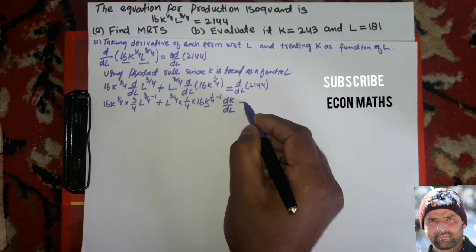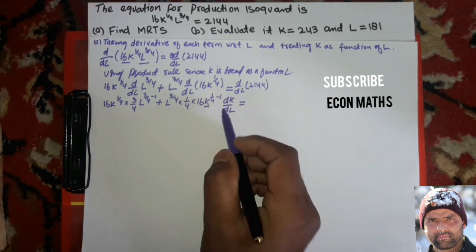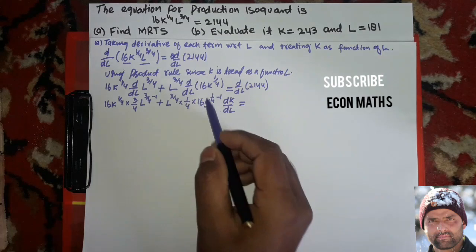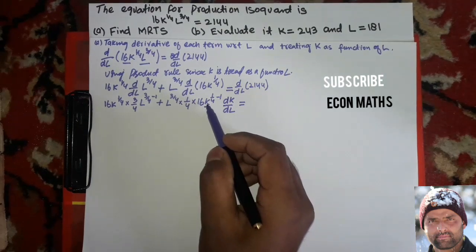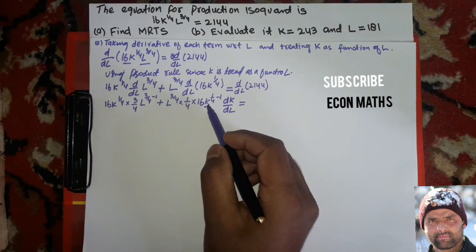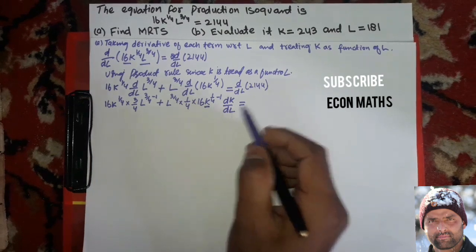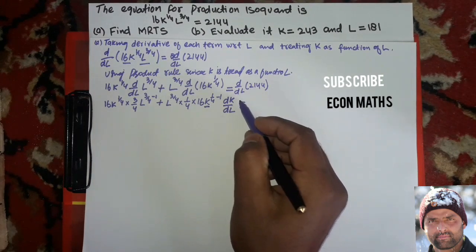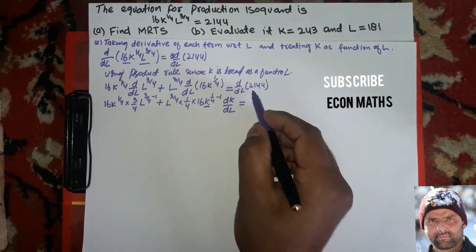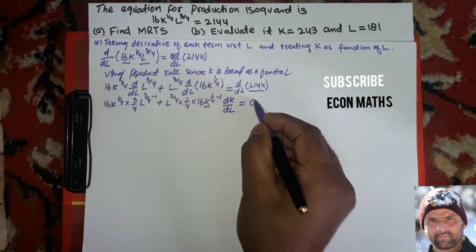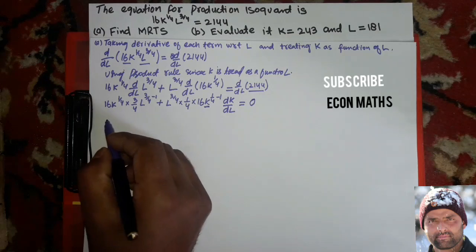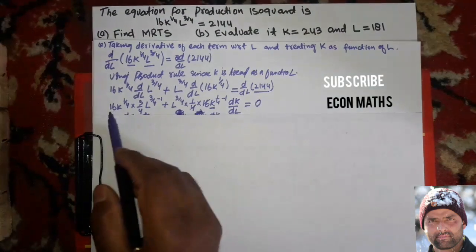This is important here because this is an implicit function — we are treating k as the function of L, so we first take the derivative of k and then also differentiate k with respect to L. On the right-hand side, the derivative of the constant 2,144 is 0. Now solving this, 16 times 3/4 gives 48/4, which equals 12.